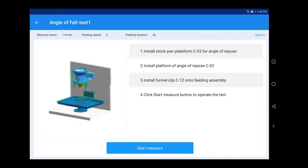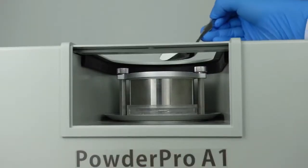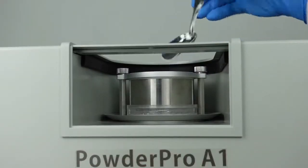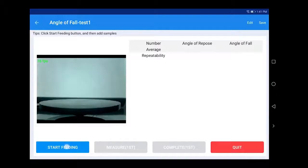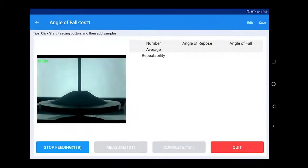Click Start Measure. Then use a sample spoon to drop the sample through a vibrating sieve and feeding funnel above the angle of repose platform. Then click Start Feeding. Keep feeding until it gradually forms a powder cone.